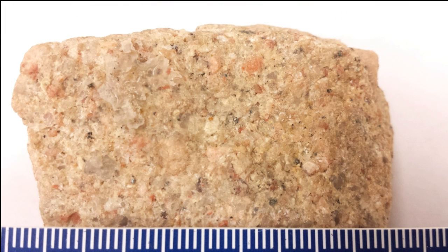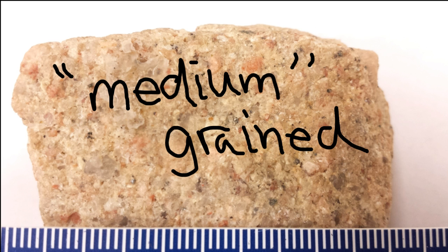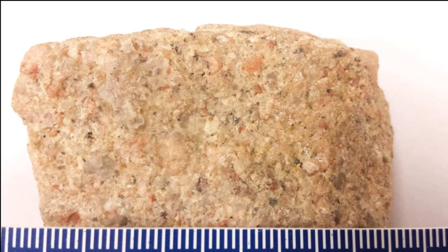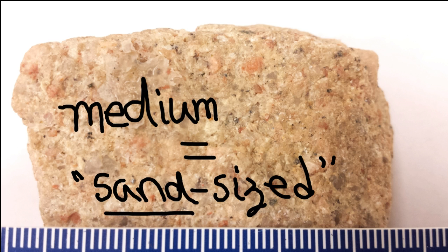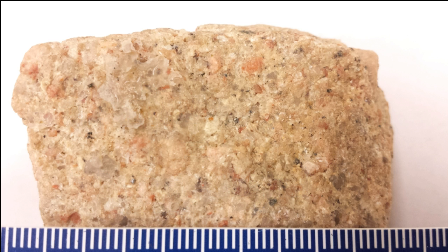This rock is composed of particles about a millimeter or 2 in size. We call these particles medium-grained. Medium-grained particles in clastic sedimentary rocks are referred to as being sized like sand grains. Note that the word 'sand' doesn't mean the grain is specifically made of quartz or feldspar — sand-sized refers only to the texture, or size, of the particles.